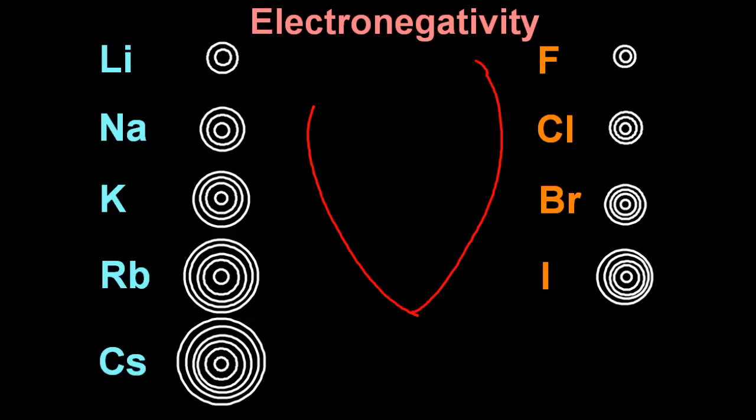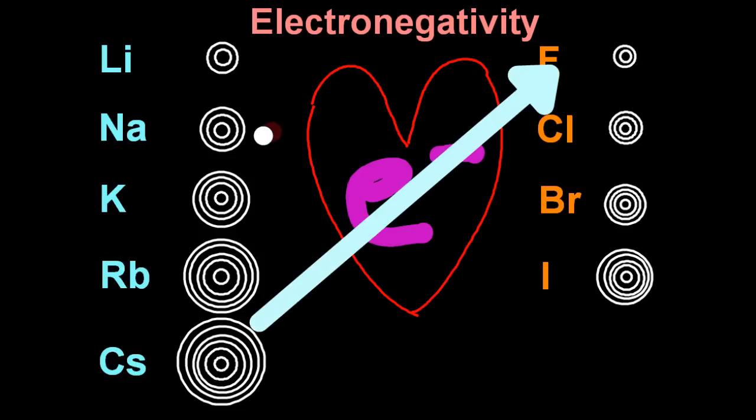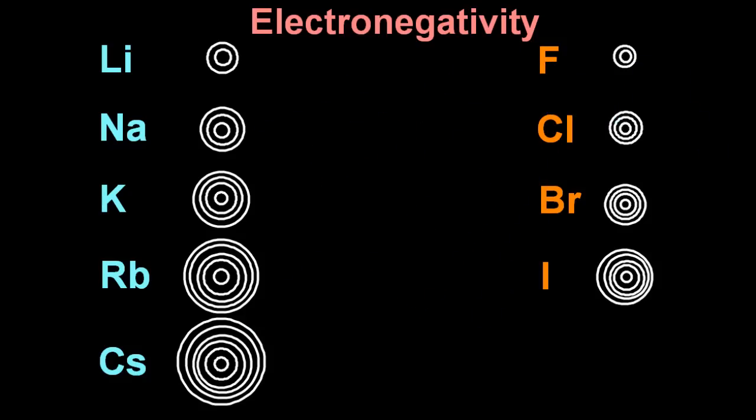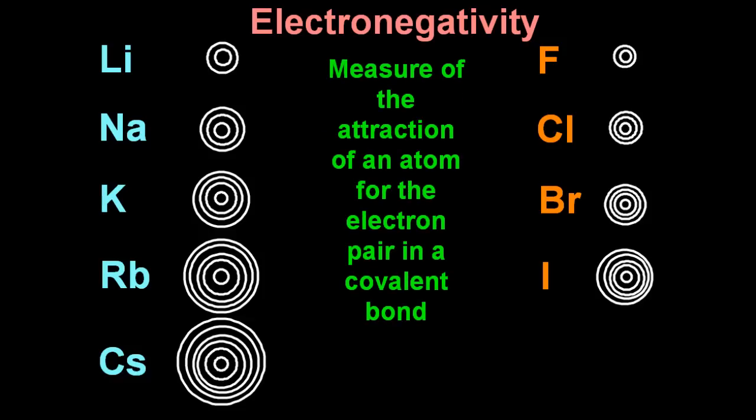Electronegativity. The IB keeps changing its definition of this. But it's electron love. That's how I think about it. I love electrons. Devoted my entire life to them. OK, fluorine has the highest electronegativity, loves electrons the most. If I use my little data booklet and copy out the numbers. Oh, hold on. Definition first. It's the measure of the attraction of an atom for the electron pair in a covalent bond. Now, for our purposes, we'll just use the first part of that definition. It's the measure of an attraction of an atom for an electron.